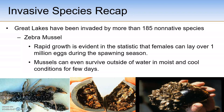The zebra mussel threatens not only biodiversity but also commerce. It has displaced some native species, depleted food supplies for others, clogged pipes, shut down water intake pipes for power plants and city water supplies, and jammed ship rudders while growing in huge masses on boat hulls, piers, and other solid surfaces. The zebra mussel first appeared in North America in 1988 in the Great Lakes region.